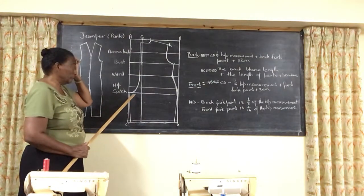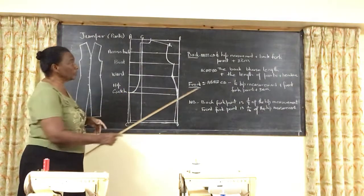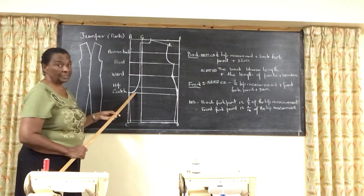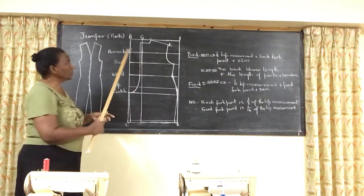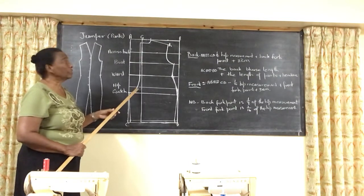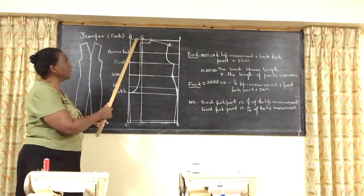Now the arm. Remember your front fork point is half of the back. So you would have a shorter fork point for the front. That's the only difference. You would put your lines in similarly. And then you would use the front fork point for here. So your G would have been a little less. Half of the back.